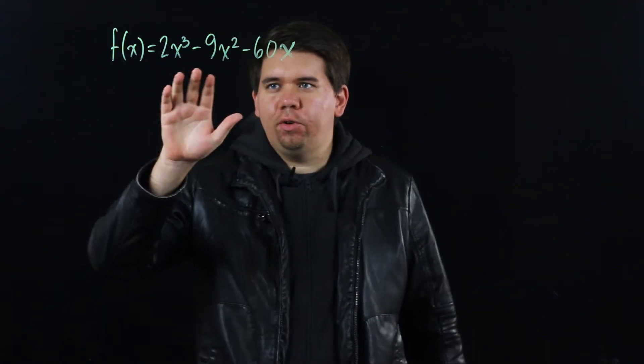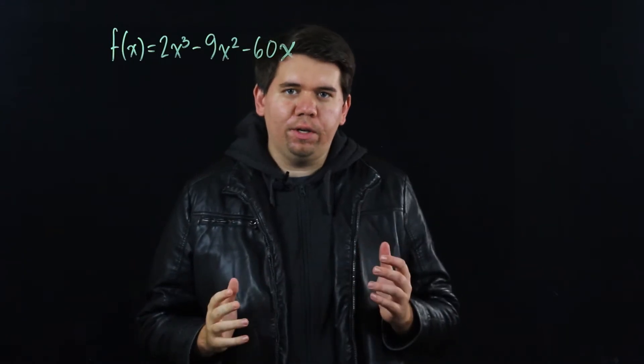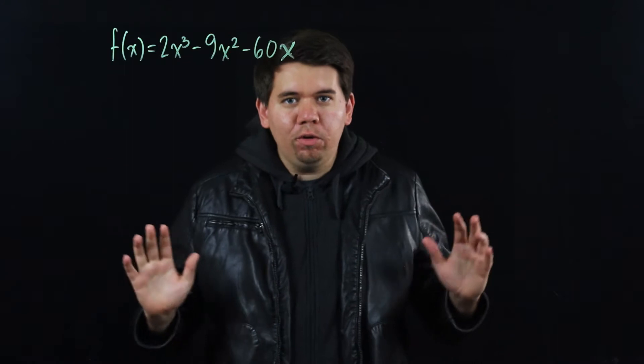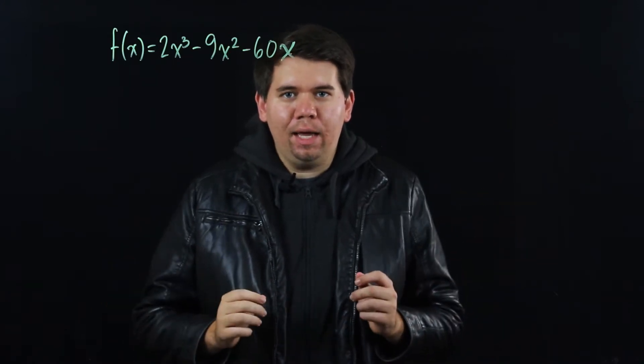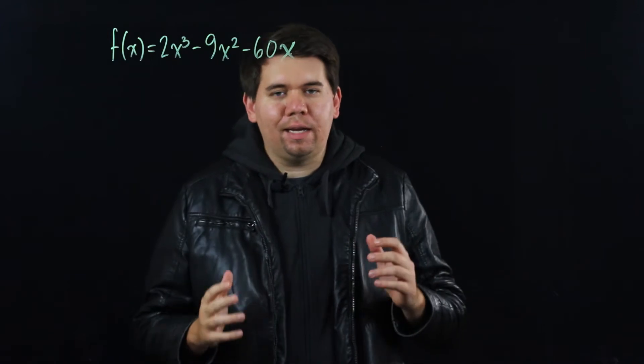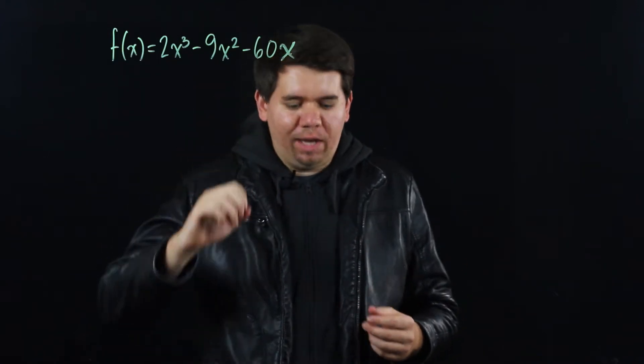Consider the polynomial 2x cubed minus 9x squared minus 60x. Our goal in this video is to sketch the graph of this polynomial. We won't use our graphing calculator. Instead, we're going to use everything we've learned about functions and limits and first and second derivatives in order to make a pretty good picture of how this graph would look.